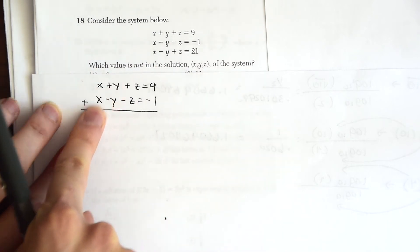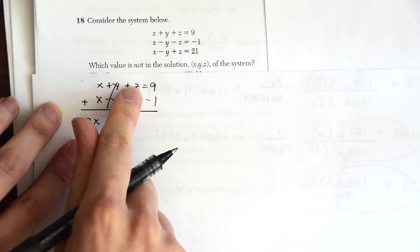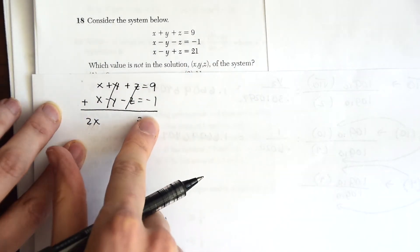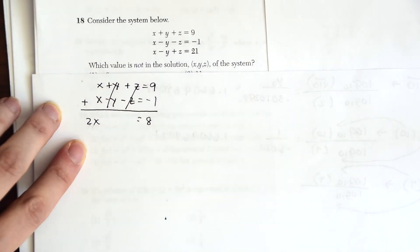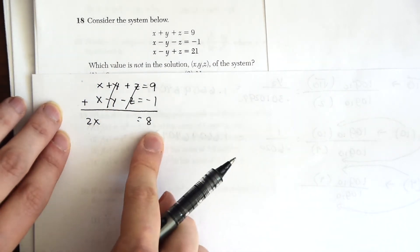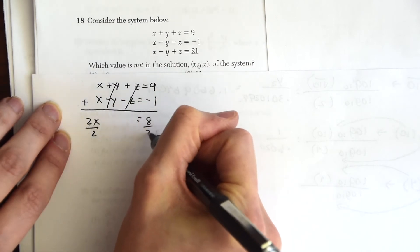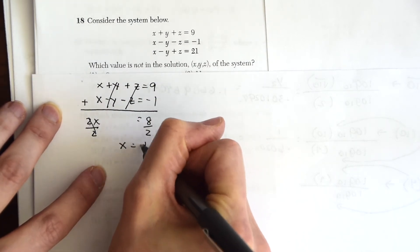So what we're doing is saying x + x is 2x. And then notice y + negative y, that's going to cancel out, and z + negative z, that's also going to cancel out, leaving us with 9 + (-1), which will give us 8. So now we just have 2x = 8 and we quickly solve for x. So we'll divide by 2 and we end up with x = 4.